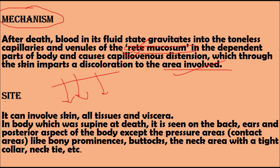The site of postmortem lividity can involve the skin, all tissues, and the viscera. In a body that was supine at death, it is seen on the back, ears, and the posterior aspect of the body, except the pressure areas or contact areas such as bony prominences, buttocks, or the neck area compressed by a tight collar or necktie.